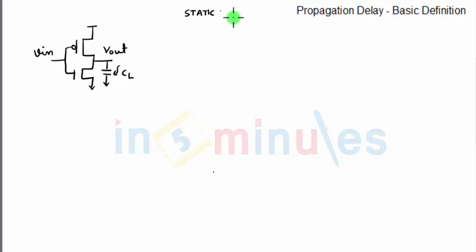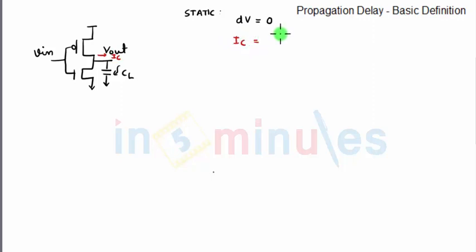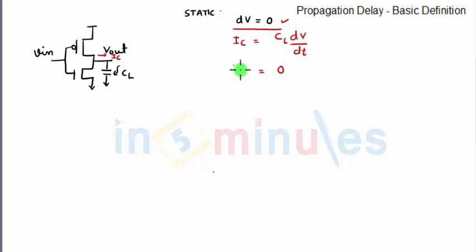When we have a steady state voltage at the output there is no difference in the voltage, so dV is equal to zero. If we presume a current IC flowing across a capacitor at the output node, IC is given by C·dV/dt — in this case it's CL. Because it was steady state, or static characteristics, dV was zero, so IC was zero. That's the reason we had not drawn the capacitor at the output when we studied static characteristics.